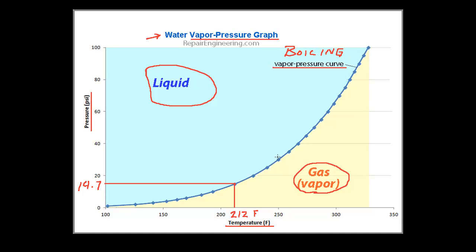Typically, if we want to boil water, we add heat in order to raise its temperature until it reaches the boiling point. We can demonstrate this process on the vapor-pressure graph. If we cause the water at a given temperature and pressure to boil by raising its temperature, we can graph that by drawing a line starting at its current temperature and pressure and ending at the boiling point. Here is a short animation that visually illustrates this process.